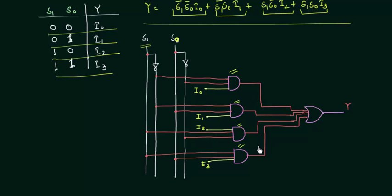And at the last I have ORed the output of all this 4 AND gates. These are your data inputs I0, I1, I2 and I3.